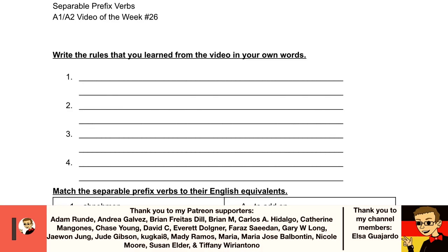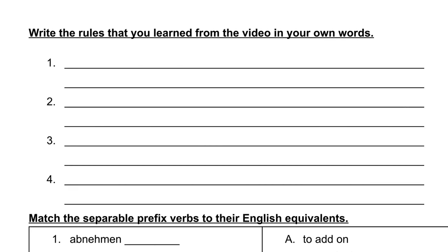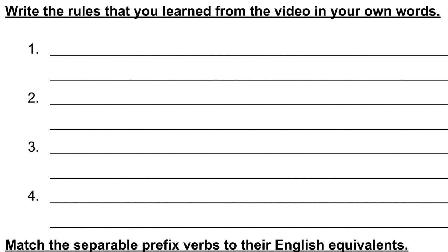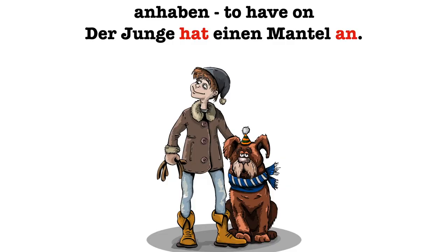First thing first, we want to know what are the rules that I established in the video about the separable prefixes. So what is it that happens to each one of these? First of all, if the separable prefix verb is used in the main clause, the prefix goes at the end of the clause or sentence. For instance, the verb anhaben, to have on: Der Junge hat einen Mantel an. The boy has a coat on. In this sentence, we have hat, which is conjugated and next to our subject like usual, and then we have an, the separable prefix, separated and then put back at the end of the sentence.